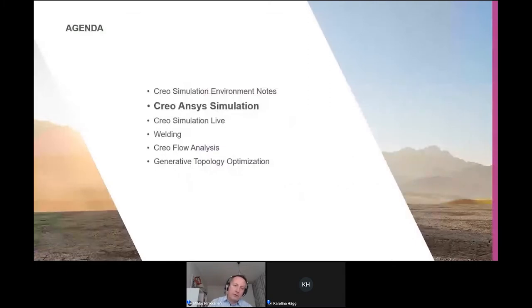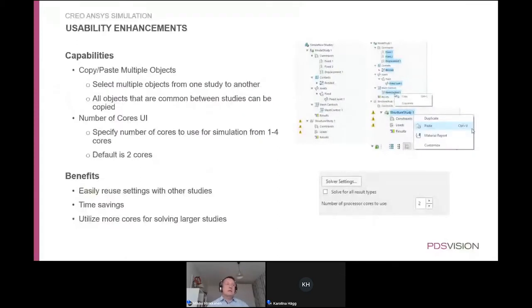Let's go through what's new in Creo Ansys Simulation. There have been usability enhancements, including the ability to copy and paste simulation objects from the model tree and from one study to another when you have multiple studies in a single model. Additionally, the number of CPU cores can now be adjusted during a run.